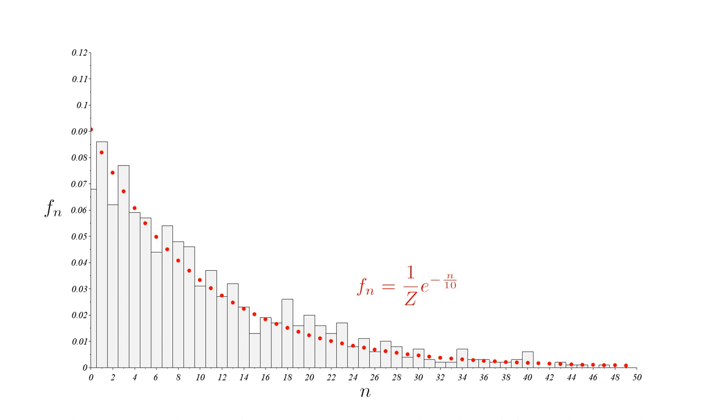This shows how a decreasing exponential distribution naturally arises when a set of containers randomly exchange their contents. We can think of the n atoms in our gas as energy containers. Through their collisions, they randomly exchange energy. Not surprisingly, therefore, the distribution of energy among the atoms is a decreasing exponential function.